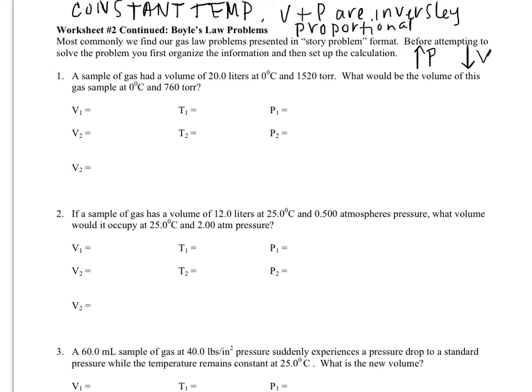So example problem number one says we have a sample of gas that has a volume of 20 liters at 0 degrees Celsius and 1520 torr. You need to be familiar with these different units. Torr is a unit of pressure.